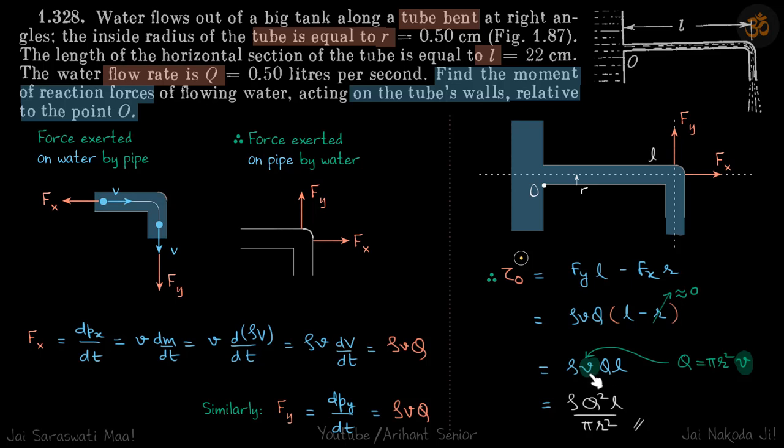Now we are not given velocity, but we are given flow rate and the radius of the tube. So we know flow rate is velocity into cross sectional area. From here we can get the value of V. So we will express V as Q by Pi R square, and this will be our answer.